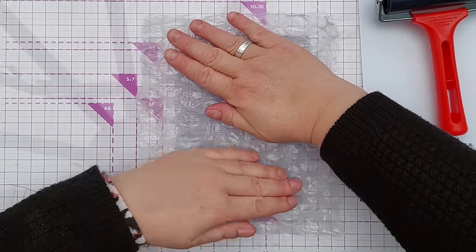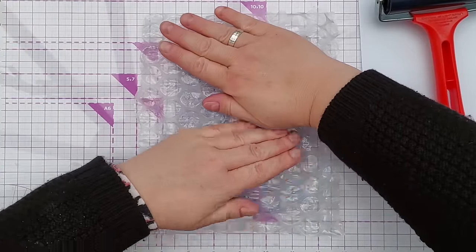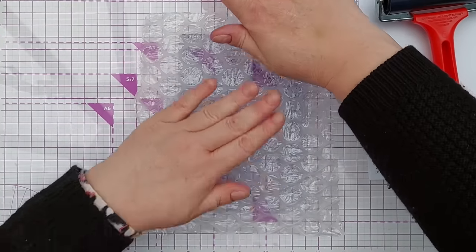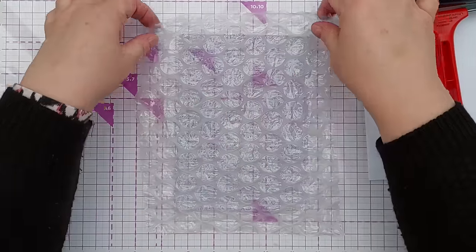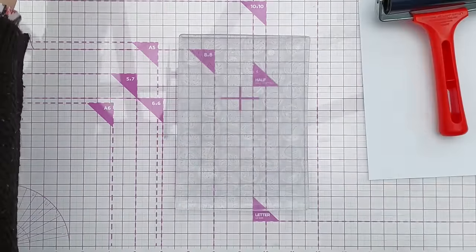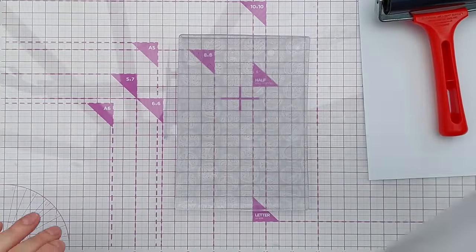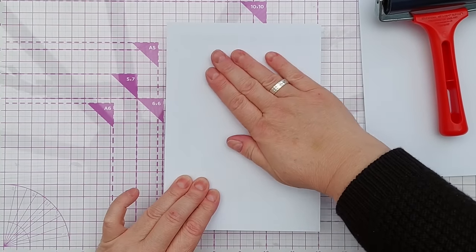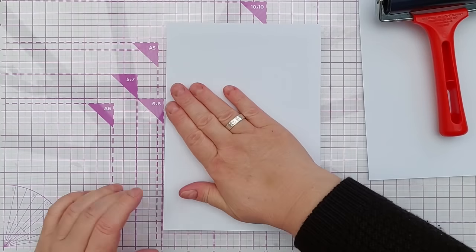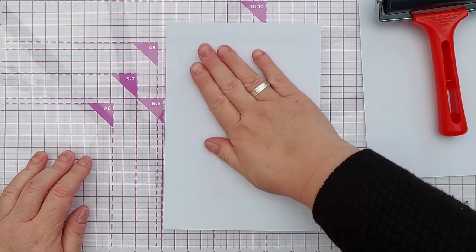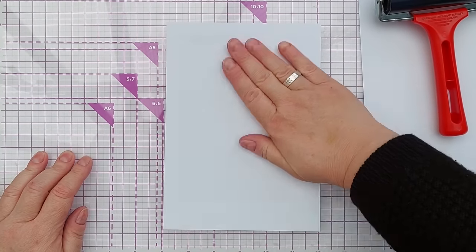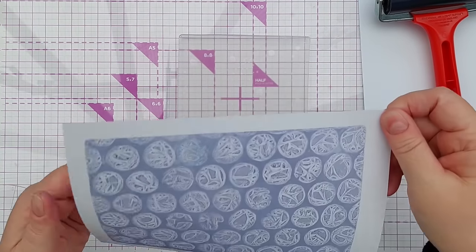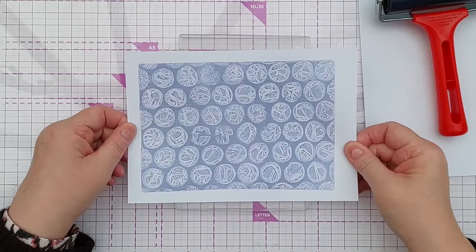Try not to shift it, just give it a good press into that distress oxide layer, lift it up, take another piece of paper here, press it down firmly all over, give it a few seconds for the ink to transfer and then lift it up and we have got this absolutely gorgeous bubble wrap print.